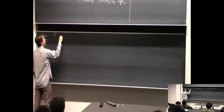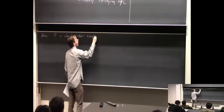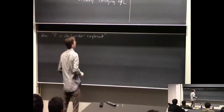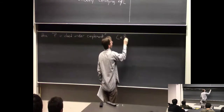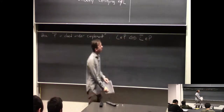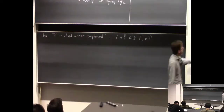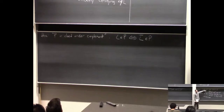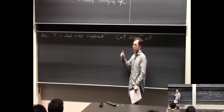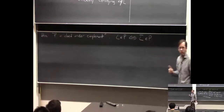P is closed under complement—it was literally problem 3A on homework 2. What this means: L is in P if and only if L-bar is in P. If you have a polynomial-time algorithm solving L, just reverse the accept and reject states, and you get a polynomial-time algorithm that solves the complement of L. Some people write this as co-P equals P.